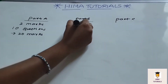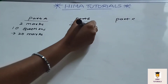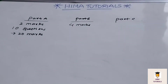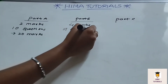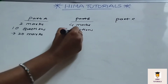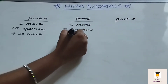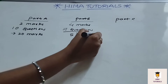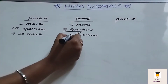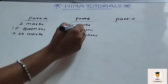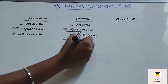Coming to Part B, here 4-mark questions will be given. There are a total of 7 questions, and out of these 7 questions, you have to write 5 questions — so choice will be there. Out of 7, you attempt 5, meaning 5 × 4 = 20 marks.